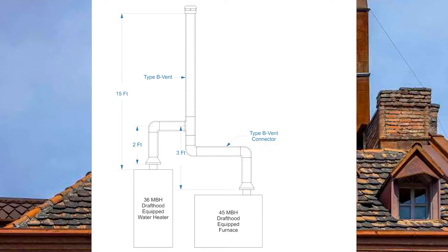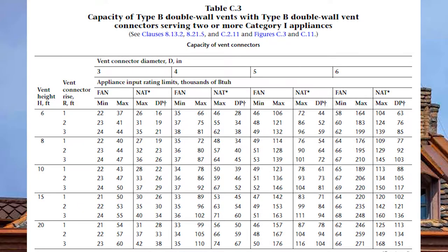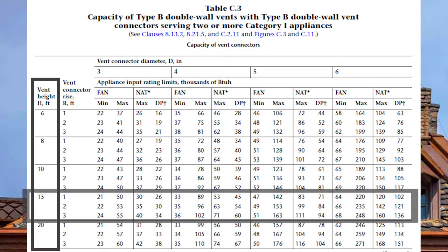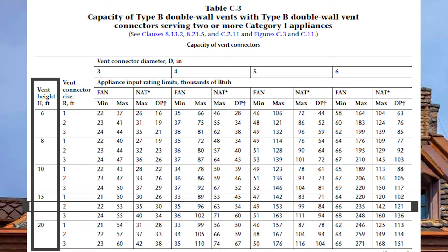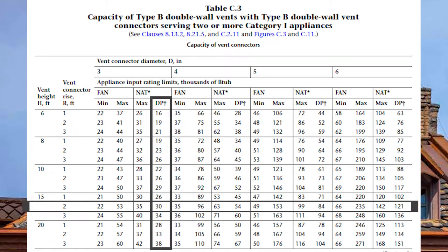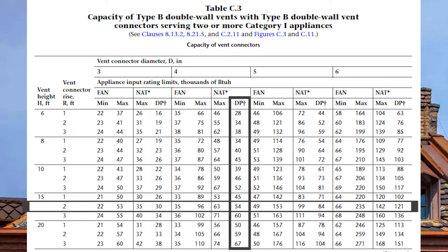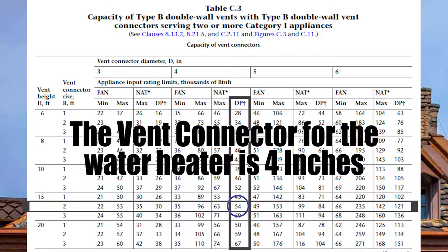Let's start with the 36,000 BTU hot water heater. Coming down on the left-hand side to the 15-foot vent height and across on the two-foot vent connector rise — this is natural draft so I need NAT DP. The three-inch area is only good to 30,000 BTUs. Moving over to the four-inch area, NAT DP is 54,000 BTUs, so the vent connector for the hot water heater will be four inches.